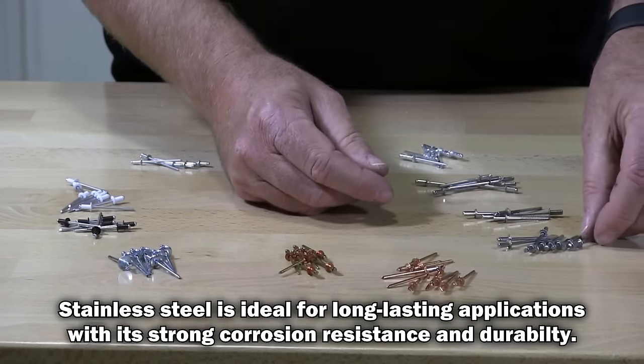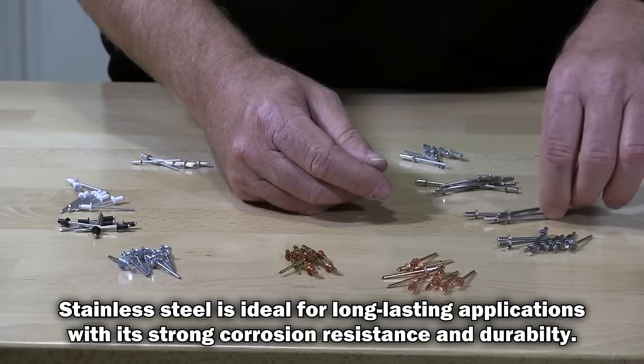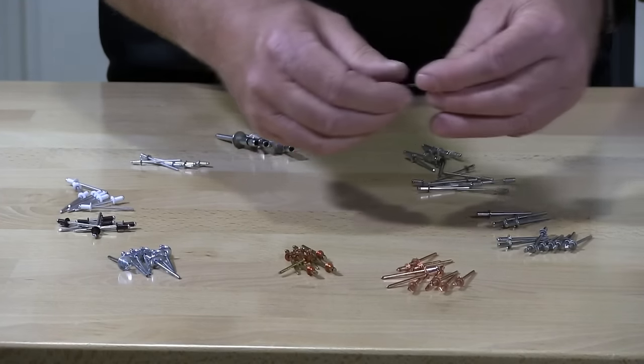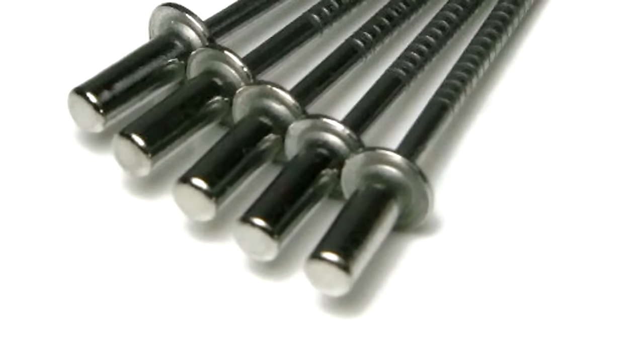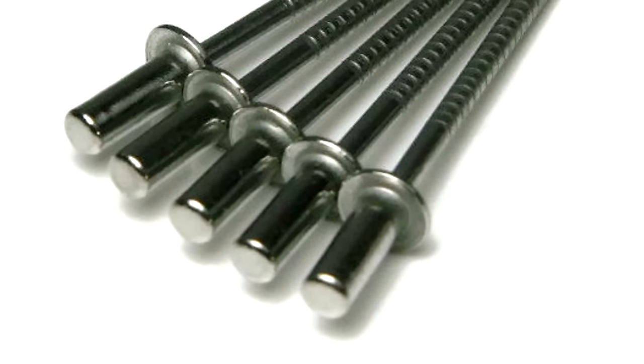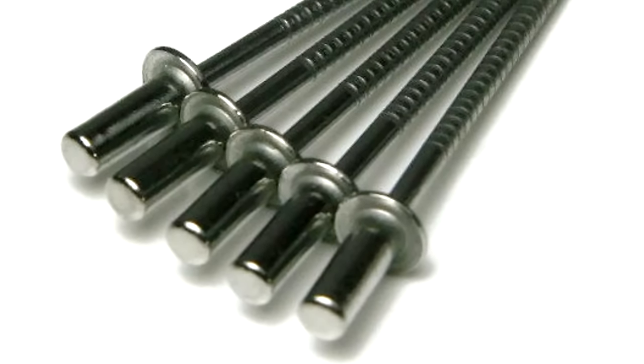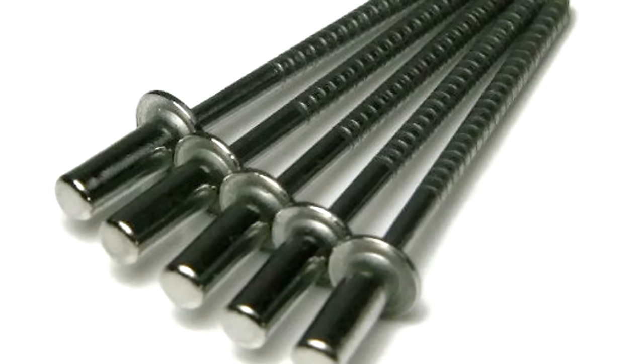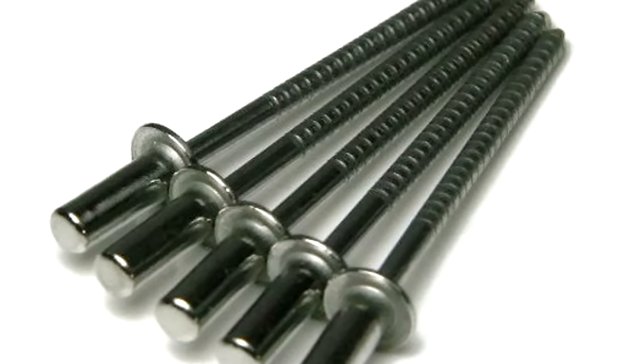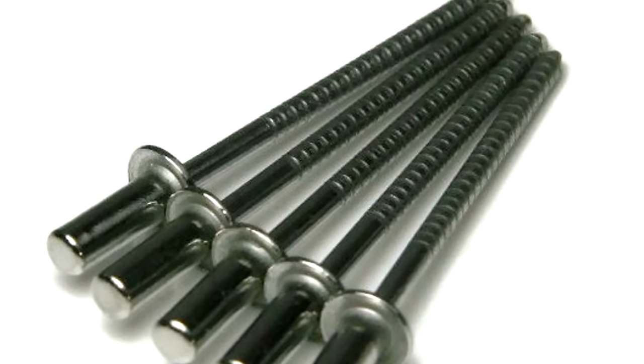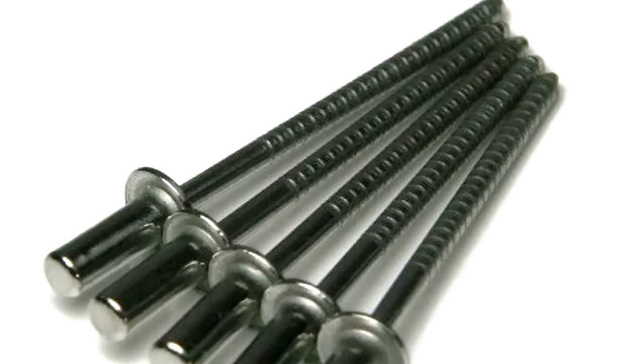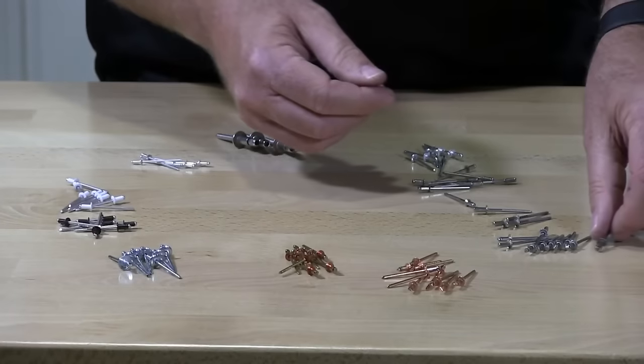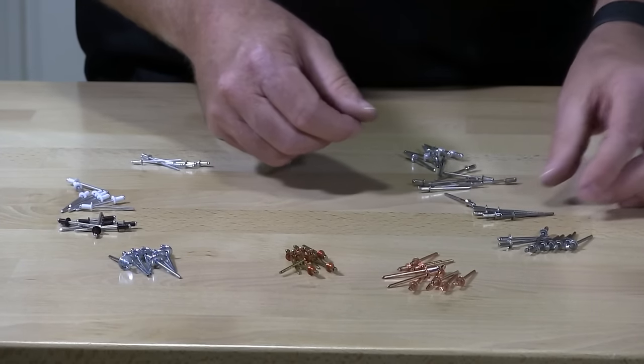I have several different types and this is what we call a closed end pop rivet. You can see here the back is square and solid so these are waterproof so if you install these in a water application, these will not leak or build water up inside the tubular part of the rivet.